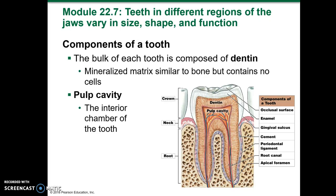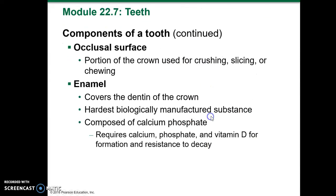Let's go into more detail with the teeth, because they are a part of the digestive system. The bulk of each tooth is composed of dentin, a mineralized matrix similar to bone but containing no cells. The pulp cavity is the interior chamber of the tooth. The occlusal surface is the portion of the crown used for crushing, slicing, or chewing. The enamel covers the dentin of the crown; it's the hardest biologically manufactured substance.